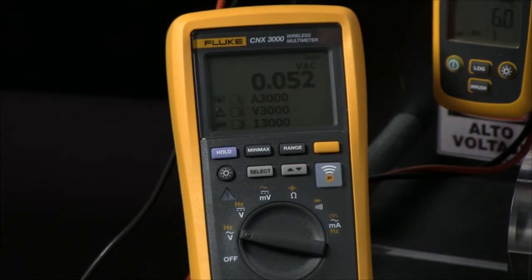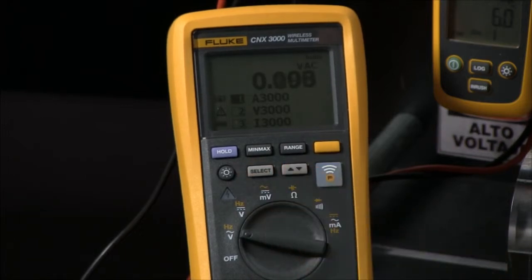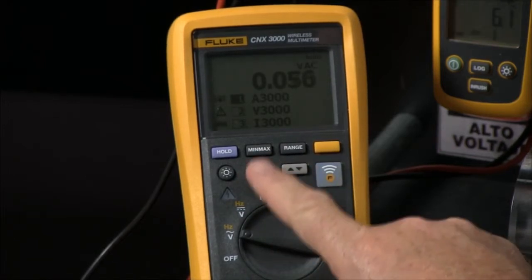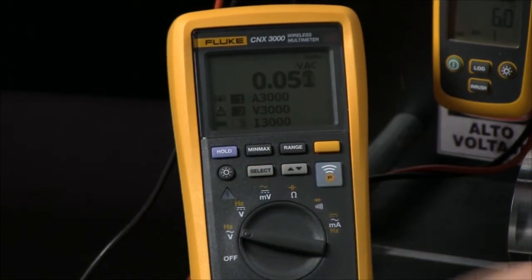So here it came up and showed us we have the A3000. I'll select that. I go to down arrow. I want to see the voltage module. I will select that, and then I have the i3000 flex clamp module. I'll select that.